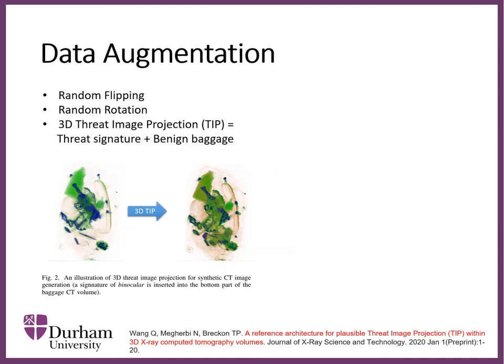Different data augmentation techniques are employed in our experiments to alleviate the data scarcity problem. We use random flipping — both horizontal and vertical — and random rotation. In particular, we use a 3D Threat Image Projection (3D TIP) technique to synthesize new baggage containing prohibited items. The basic idea of 3D TIP is to combine a target object CT volume with a benign baggage CT volume in a reasonable way. More details of this technique can be found in the reference.